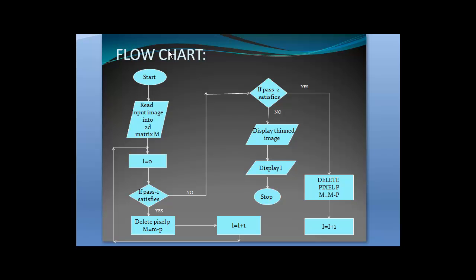This is the flowchart used. It starts here. It reads an input image into a 2D matrix. i equals 0 is the pixel considered. It checks for the pass1 condition. If it satisfies the pass1 rule, then it deletes the pixel and moves to the next pixel, and repeats the procedure.